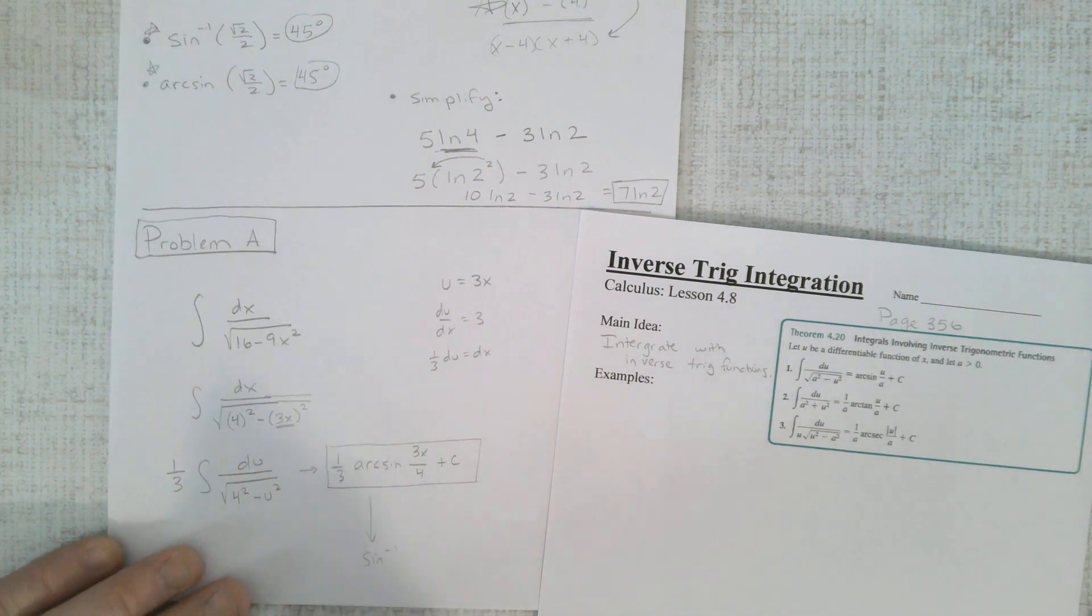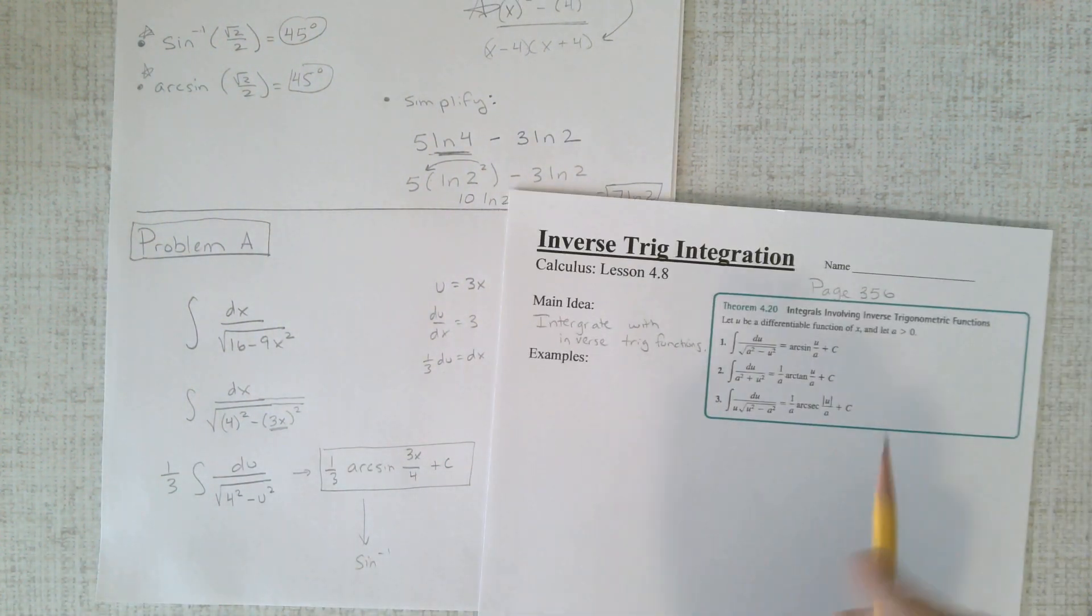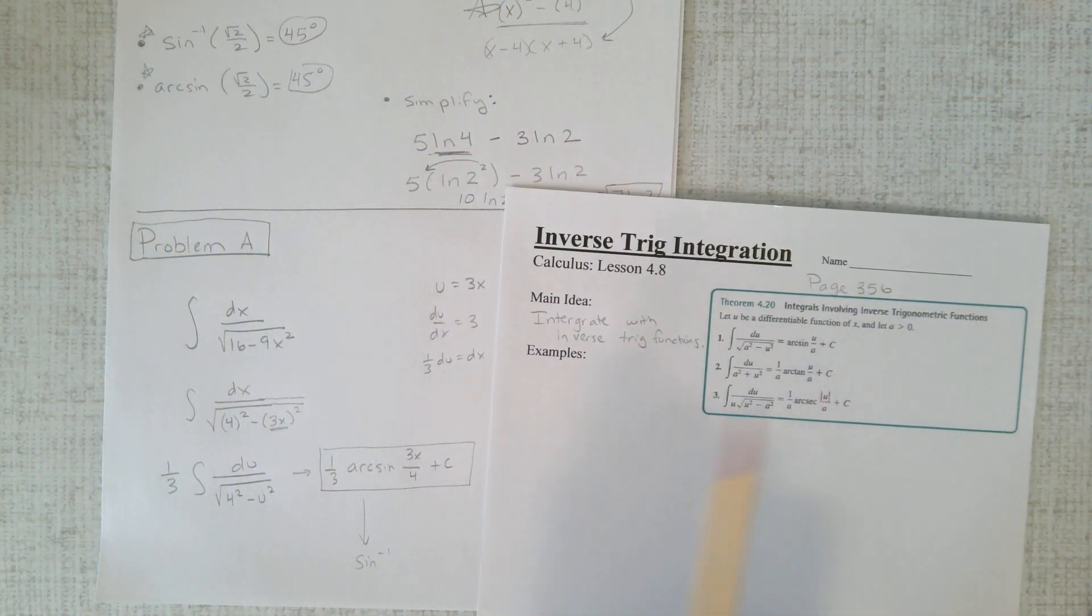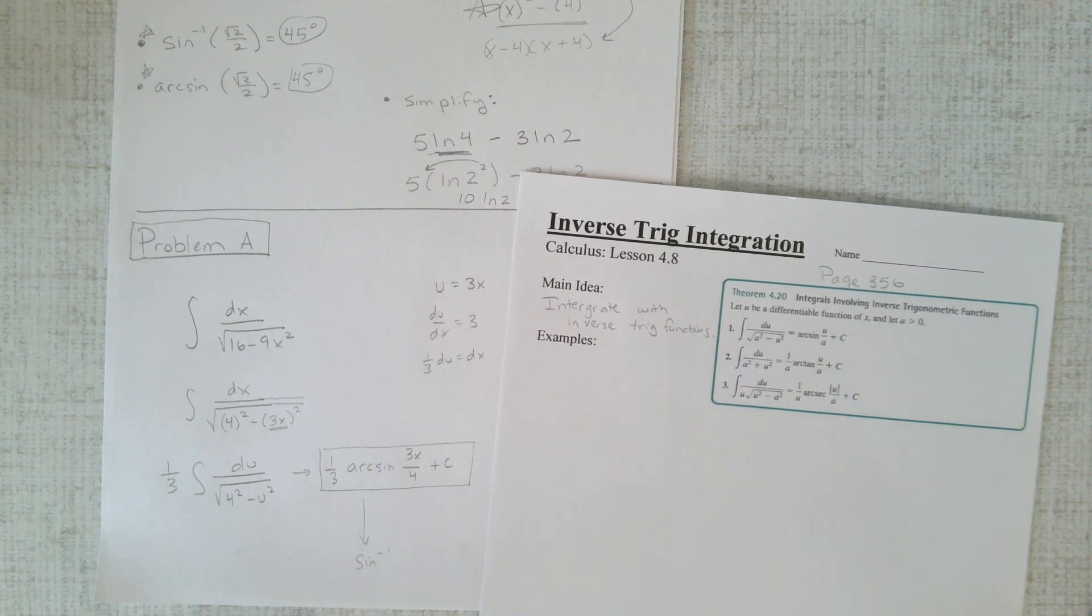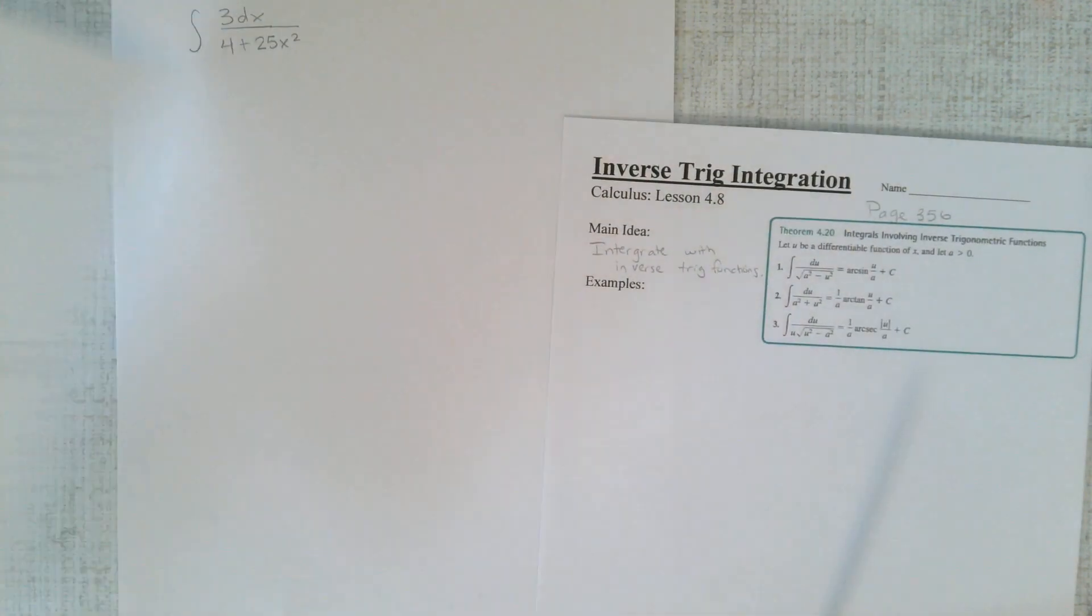So they are rather straightforward. If you can line them up here, the key is to write it out this way and let u be that part that's being squared. There, there, in there. All right, rather straightforward. Let's go on to another example, example b.